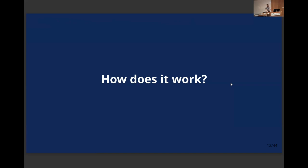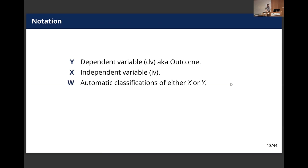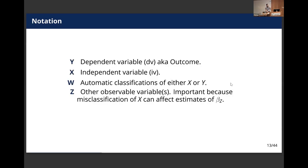Now I'll transition to talking at a high level about how this works. The notation is pretty intuitive: Y is a dependent variable, X is an independent variable, W are the automatic classifications of either X or Y depending on which case we're looking at. It also matters to talk about other observable variables Z, because we're doing multiple regression. You might be using predictions just as a control variable and care about estimating beta_Z, or both beta_Z and beta_X. Because you're in multiple regression, if Z and X are correlated, the misclassification errors in X can affect your estimates for beta_Z.